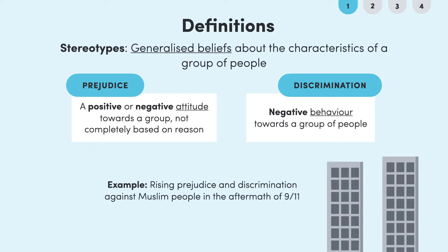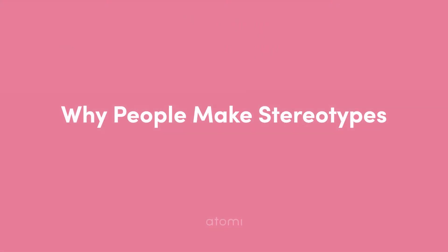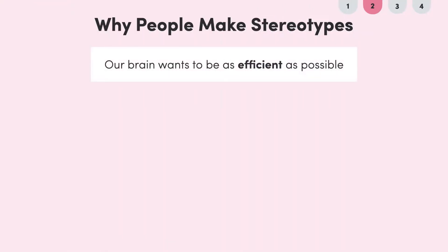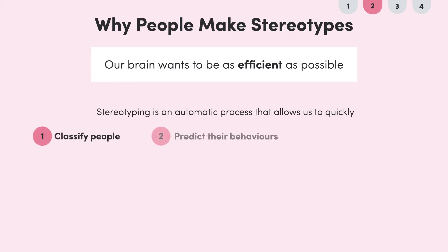An example of this is rising prejudice and discrimination against Muslim people in the aftermath of the 9-11 attack. So why do we make stereotypes in the first place? It comes down to the fact that our brain wants to be as efficient as possible — you could even say that it's being lazy. Stereotyping is an automatic process that allows us to quickly classify people, predict their behaviors, and decide how to act around them. In this way, stereotypes are like mental shortcuts.